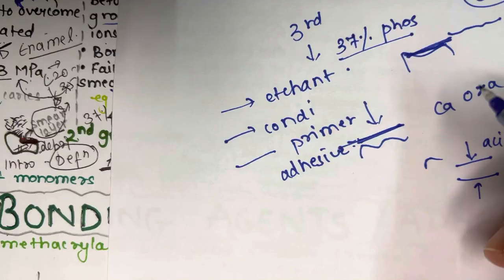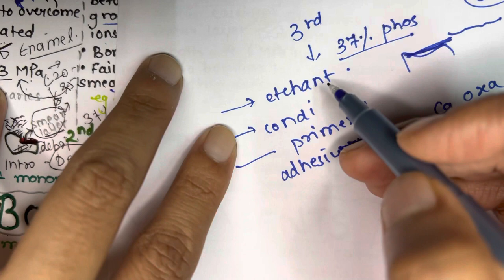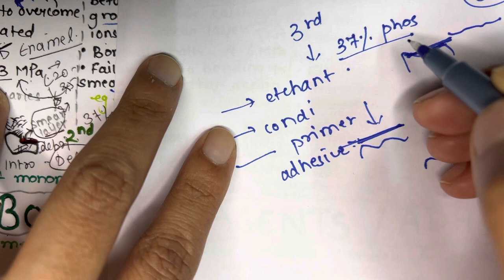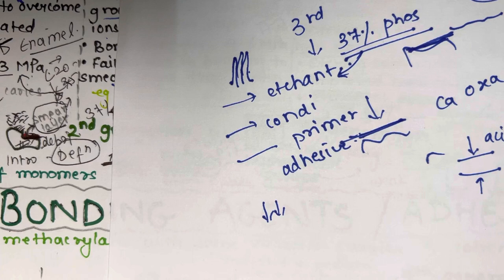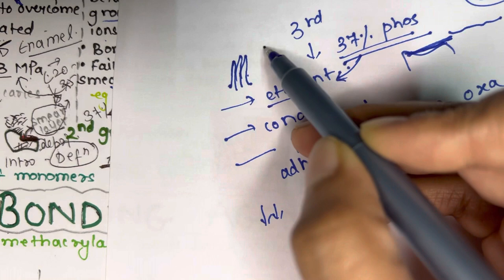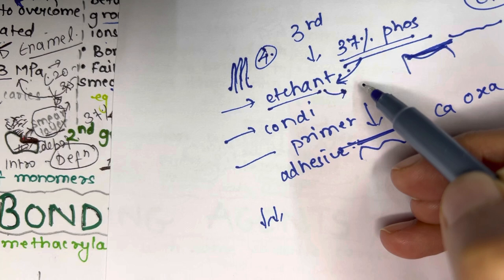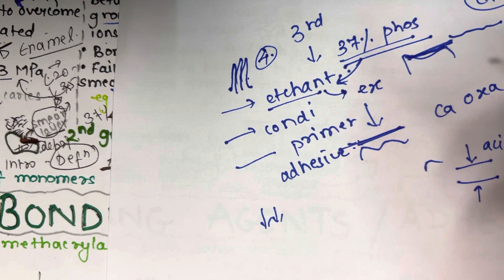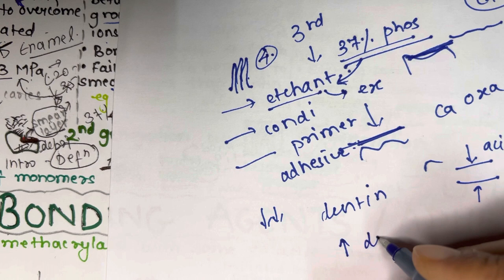The etchant used was 37% phosphoric acid, which is still used today. The etchant has four main functions: it removes the smear layer, it exposes the collagen fibrils, it demineralizes the dentine, and it increases dentine permeability by four to nine times.